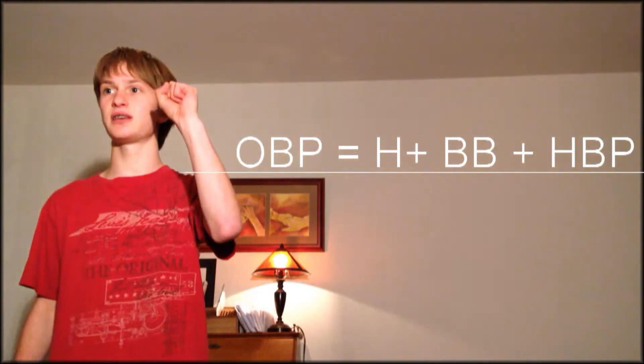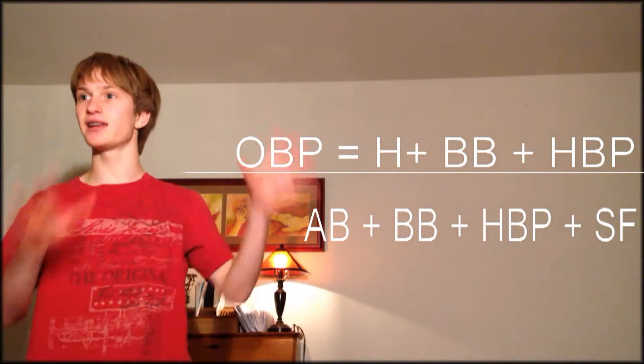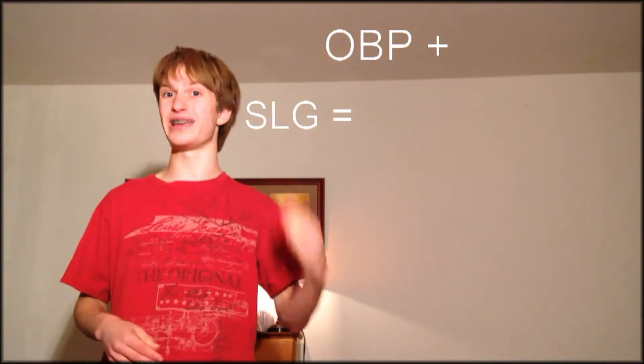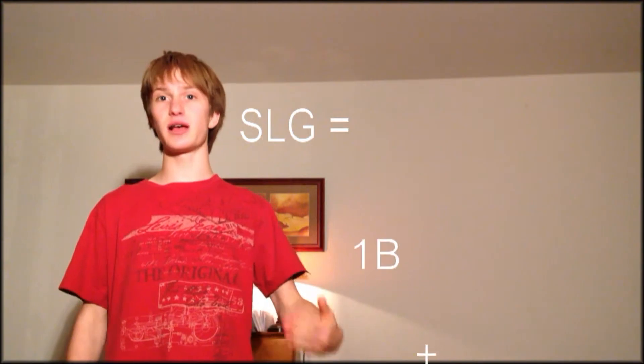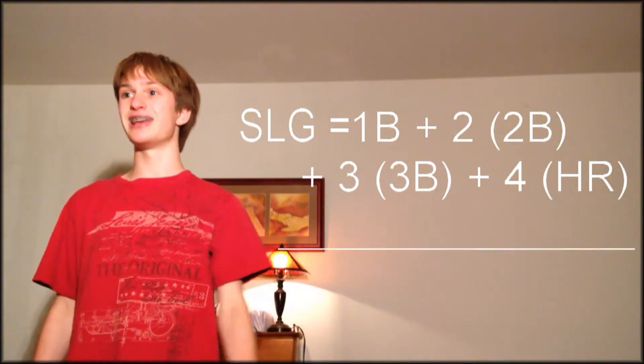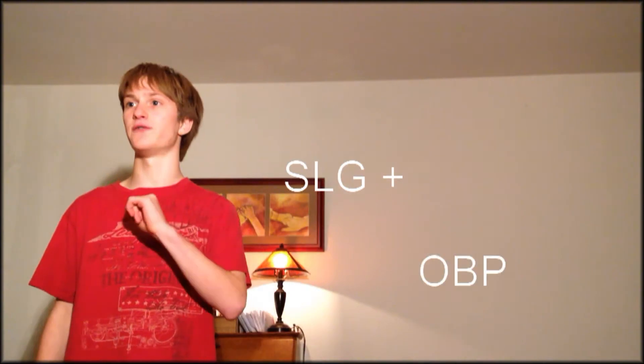In his book Moneyball, Michael Lewis argues that it's not batting average that's important, but OPS — on base percentage plus slugging percentage. A player's on base percentage is hits plus walks plus hit by pitches, divided by at bats plus walks plus hit by pitches plus sacrifices. Add that to a player's slugging percentage, which weights the value of hits: singles, plus two times doubles, plus three times triples, plus four times home runs, divided by at bats. Add those two together and you have OPS.